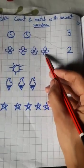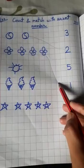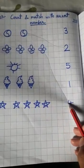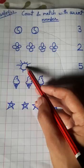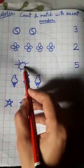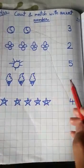So match it with number four. Now next is one sun. So look here, where is number one? Here.